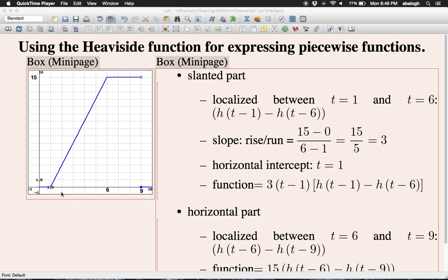The horizontal intercept is 1. It goes through the t = 1 point. So with all this information, we have the function for this slanted part only: 3, the slope, times (t - 1). That's the linear function. For localization, you multiply this with [h(t-1) - h(t-6)].